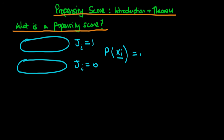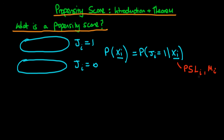What I mean by that is the probability that an individual chooses Ji equal to 1 given their list of personal variables. So that might represent, in the example we've spoken about, that individual's past sales level in the last year, and it might also represent that individual's level of motivation — more motivated people might tend to be more predisposed to choosing the treatment. So to summarize, a propensity score is the probability that an individual chooses the treatment given their covariates.